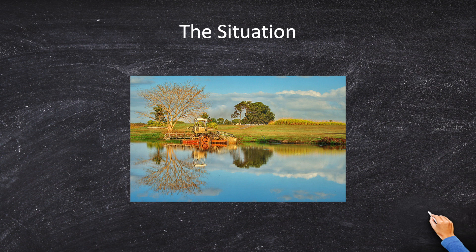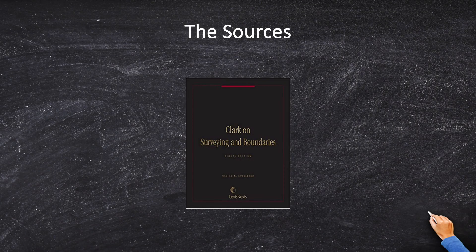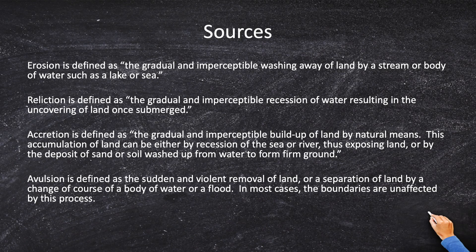When we talk about the structure of the lake, you're losing water. So what is going to be the opposite of losing water? It's going to be gaining water. Let's go to Clark and read about these four processes. Erosion is defined as the gradual and imperceptible washing away of a stream or body — not helpful. Reliction is defined as the gradual and imperceptible recession of water and the uncovering of land once submerged — that's what's happening here.